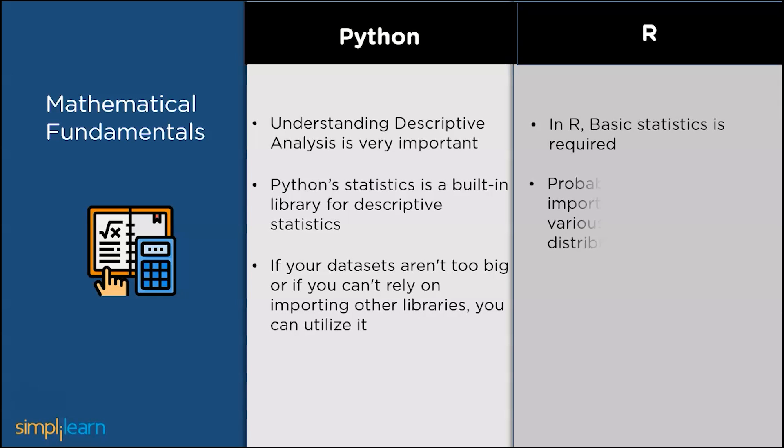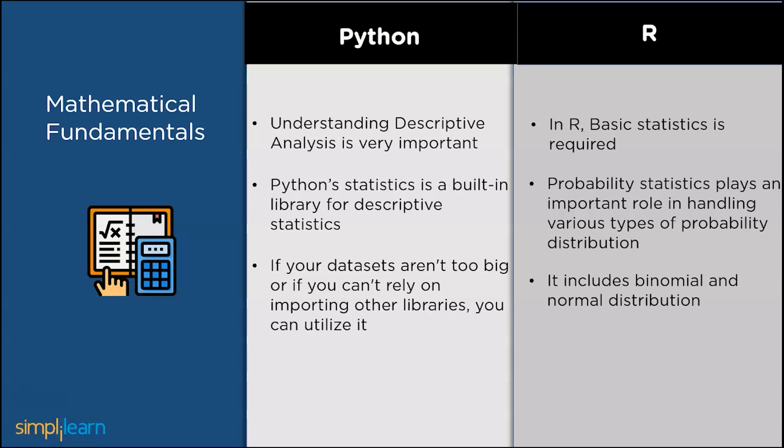On the other hand, R requires basic statistics. From basic statistics, what I mean is mean, mode, and median are the terms used most frequently. It is referred to as measures of central tendency. Probability statistics plays an important role in handling various types of probability distribution. It includes binomial and normal distribution.